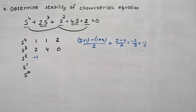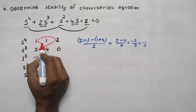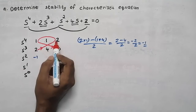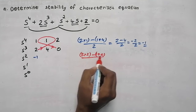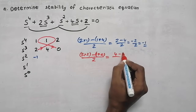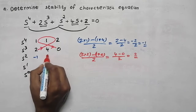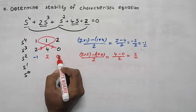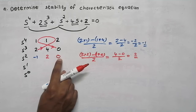For the next element, starting from 2: 2 into 2 minus 1 into 0, divided by 2. That gives 4 minus 0 divided by 2, which equals 2. The element after that is 0 because there is no element to multiply — it is a vacant space, so we put 0 there.